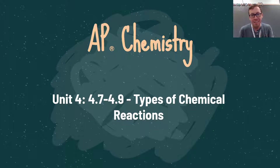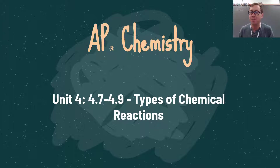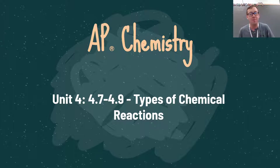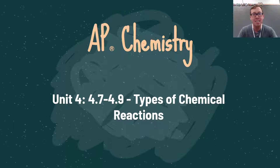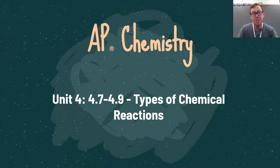Welcome back to another exciting chemistry video. Today our focus is going to be on determining different types of chemical reactions. We can look at that based on whether things gain or lose electrons, whether things gain or lose hydrogen atoms, how those bonds are broken, how those bonds are made. There are lots of different ways to identify different types of chemical reactions based on how the reaction itself behaves.